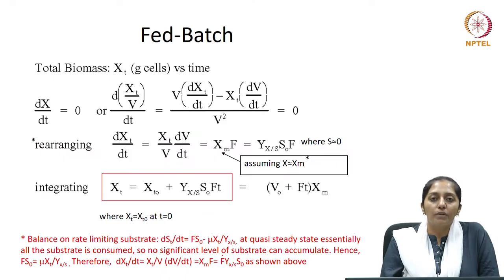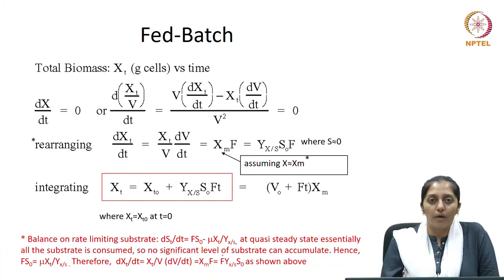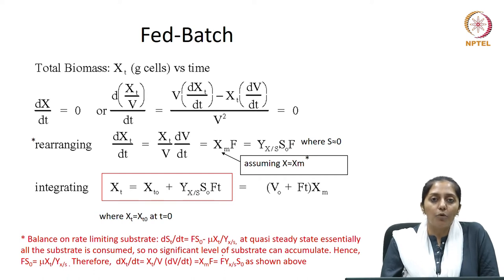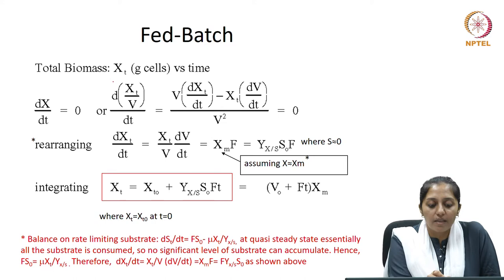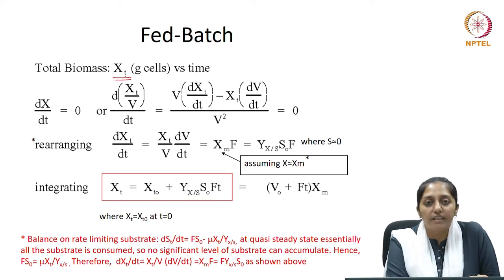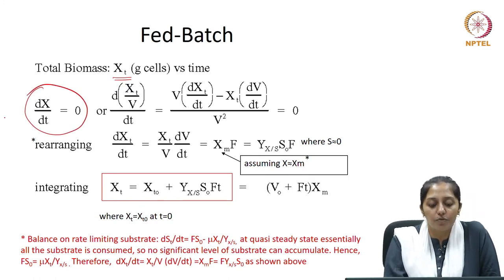At quasi-steady state, the biomass concentration is not changing with time — it was a variable but is now at steady state. So there is no change: dx/dt is 0. However, the amount of biomass in a fed-batch process will keep changing with time because the volume is changing. Let us see how it changes. We assume the total biomass as xt at any given time t, and we know at quasi-steady state dx/dt equals 0.